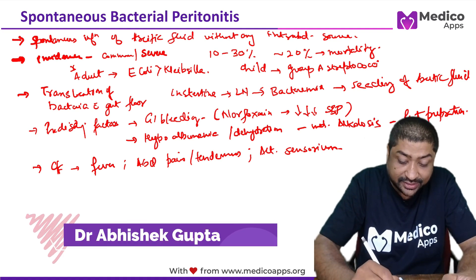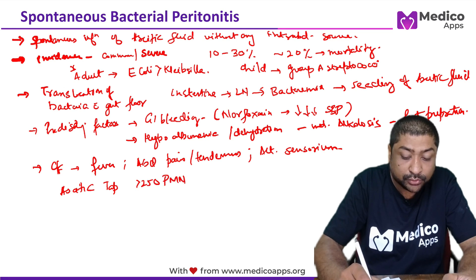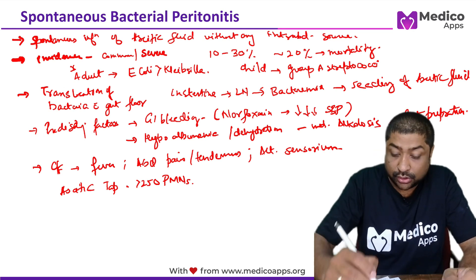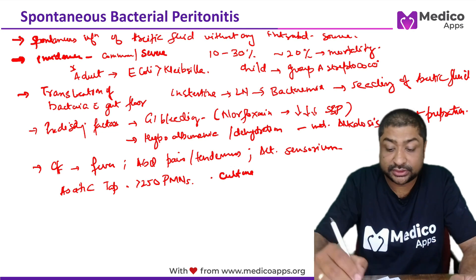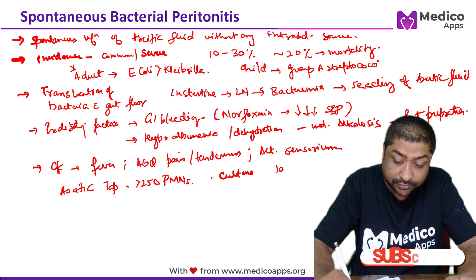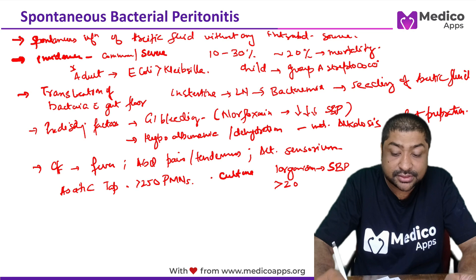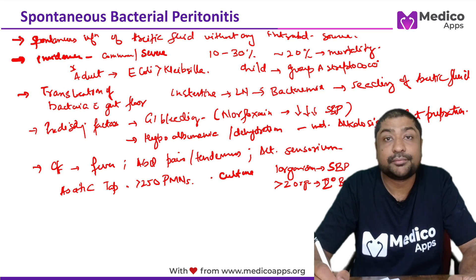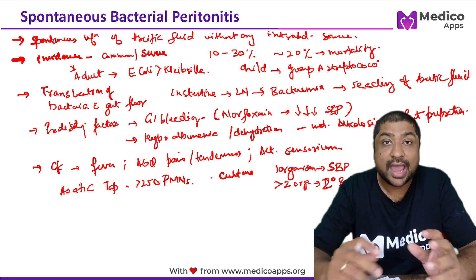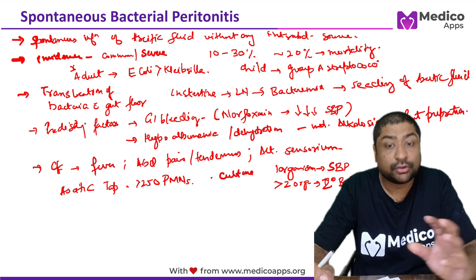On ascitic tap, we will find increased polymorphonuclears — more than 250 PMNs is the key finding. On culture, a very important point: if only one organism is isolated, it is SBP. If two or more organisms are isolated, it is a case of secondary bacterial peritonitis, probably due to rupture of an internal organ.